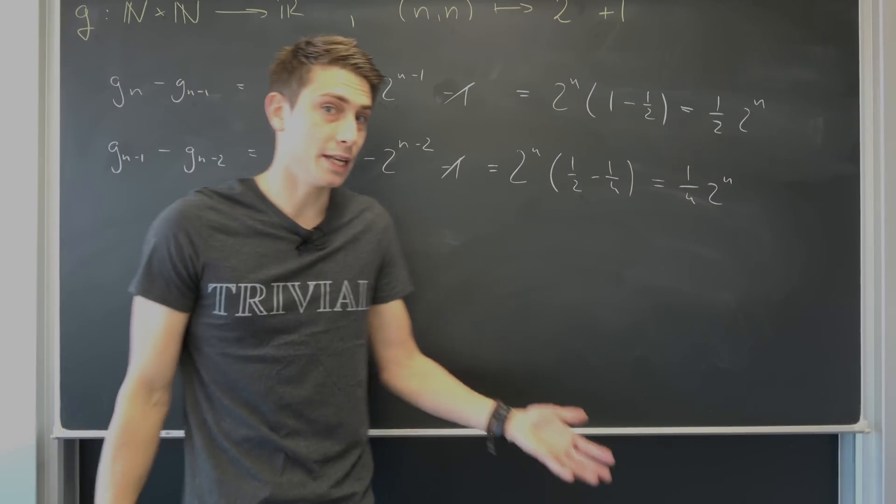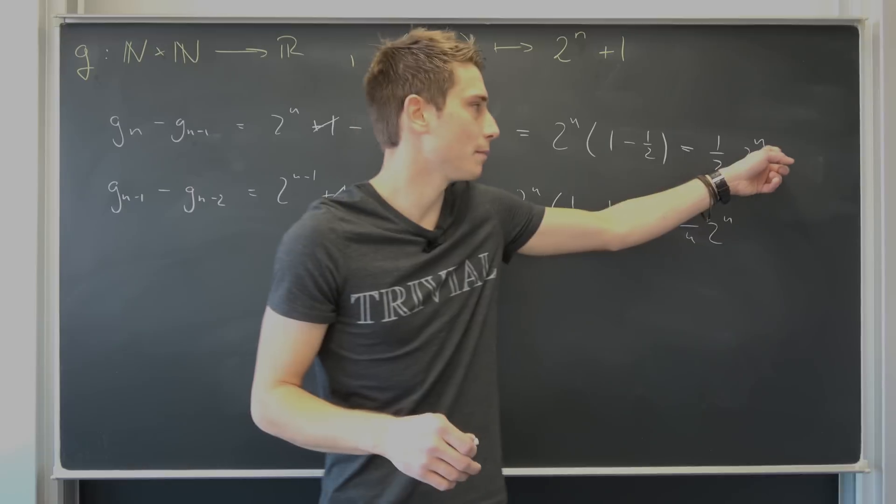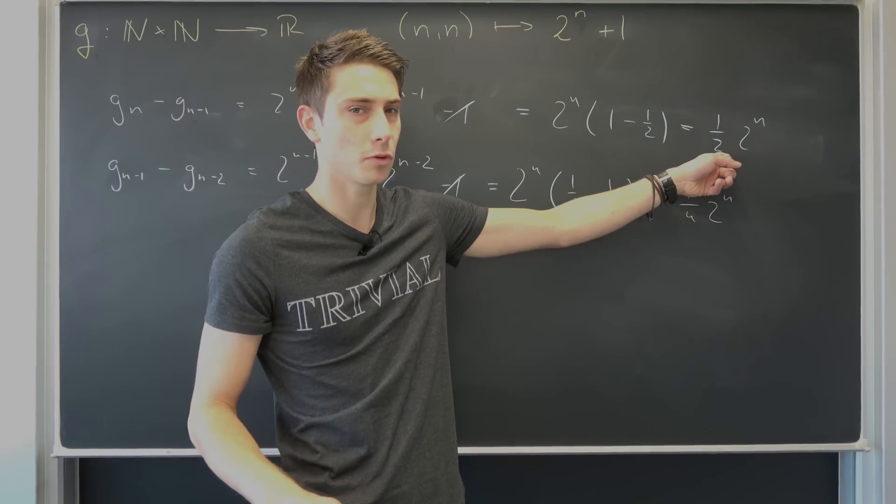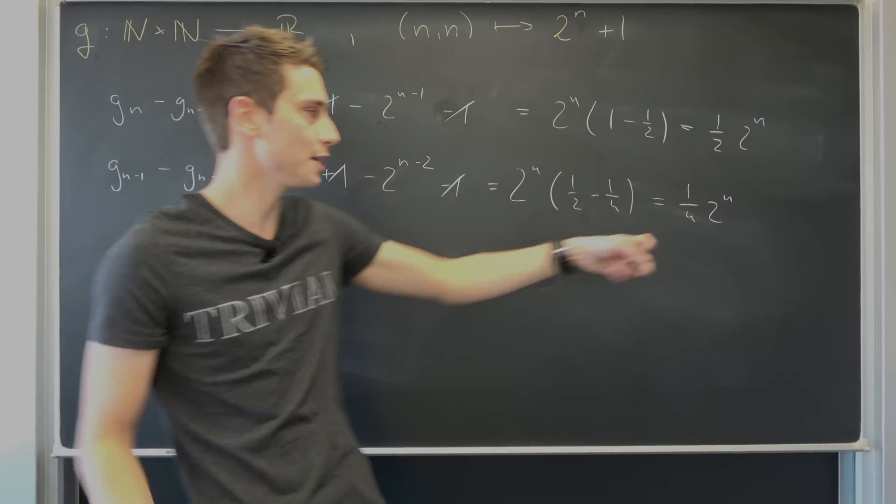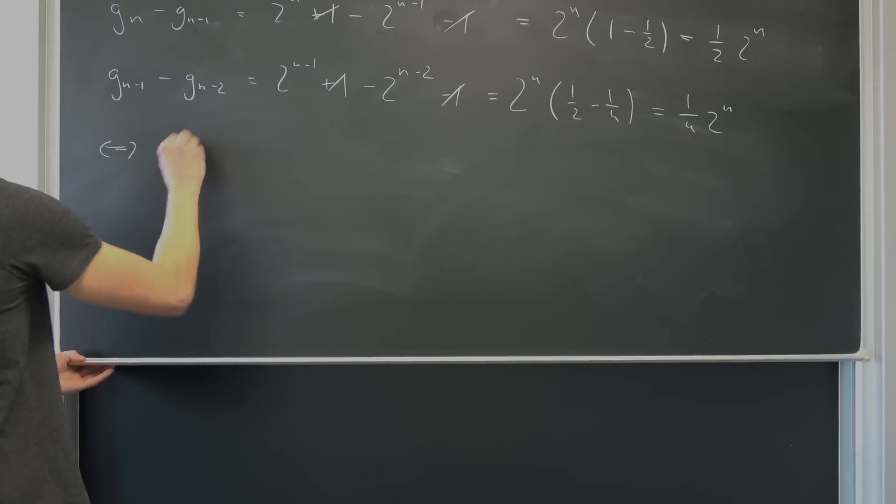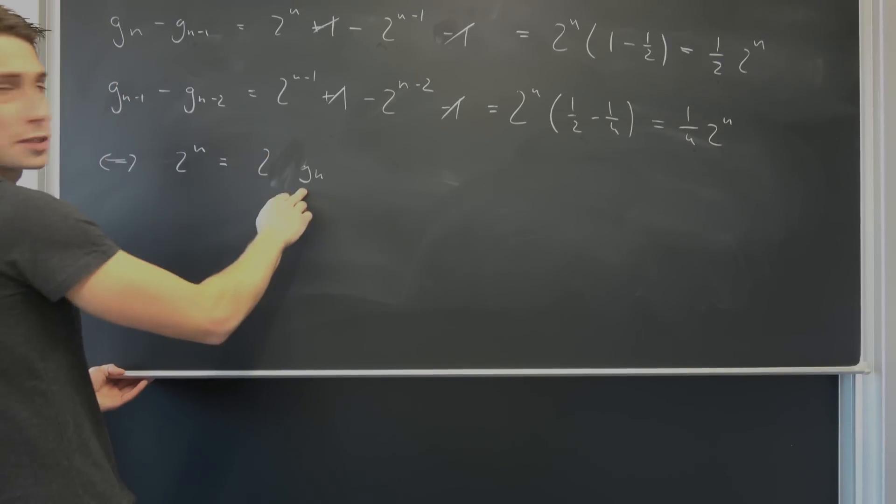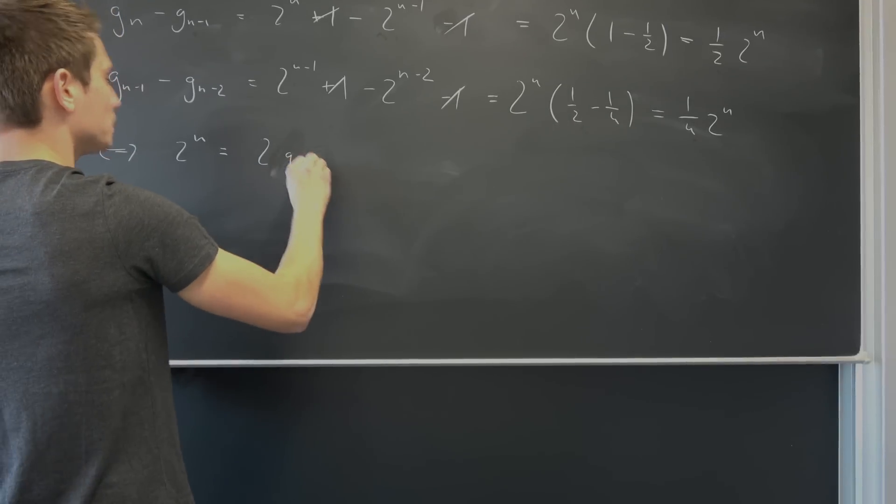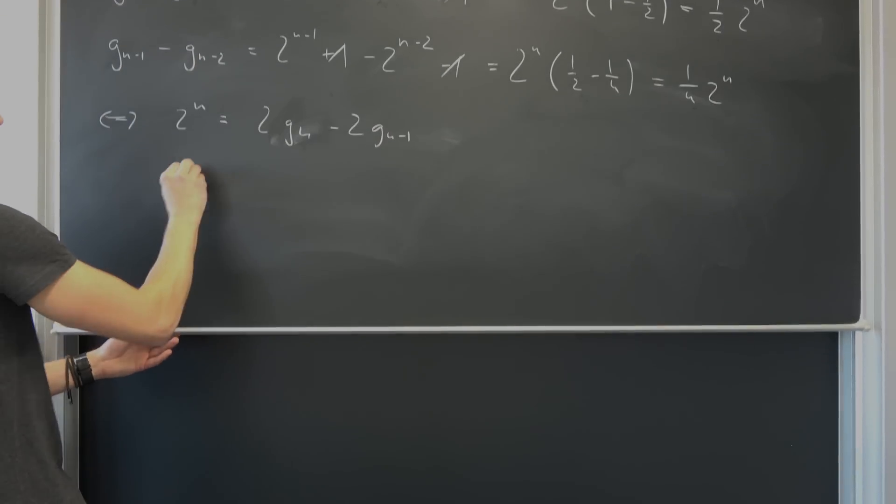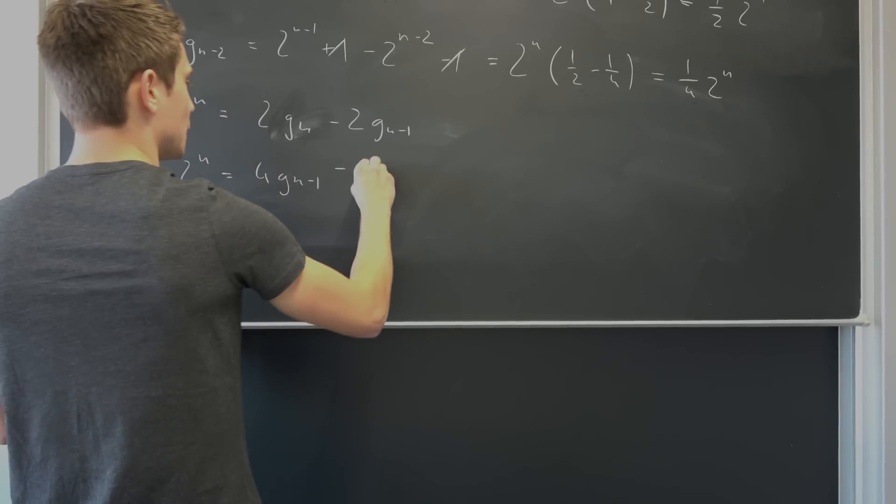And what we can now do, and this formula is quite cool because it's not going to be dependent on some factor n right here in the end. What we can do is multiply this whole equation by 2, since 2 is not equal to 0, and this equation by 4. So for the first equation, we are going to get 2^n is nothing but, well, 2 times g_n minus 2 times g_{n-1}. And for the second equation, we are going to get 2^n is nothing but 4 g_{n-1} minus 4 g_{n-2}.